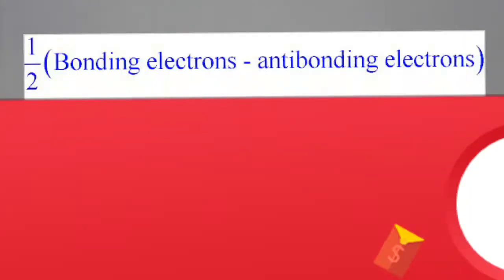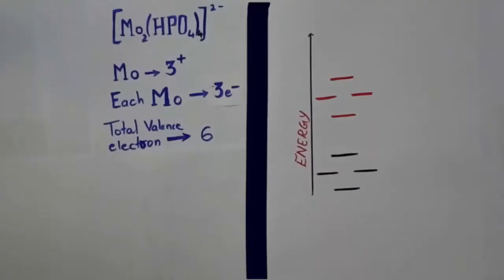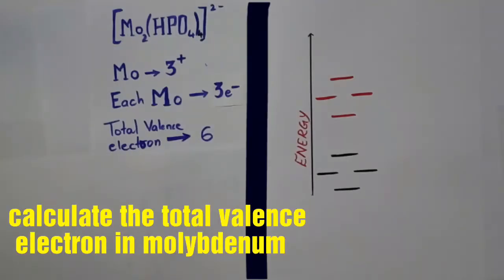We need the following formula. In the following molybdenum complex, the charge on molybdenum is positive 3. Each molybdenum has 3 valence electrons, so the total valence electrons will be 6. We will fill these valence electrons in the molecular orbital diagram as follows.